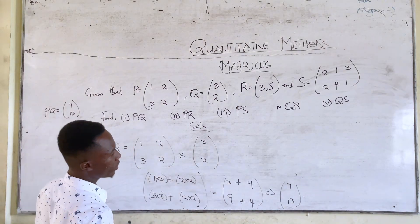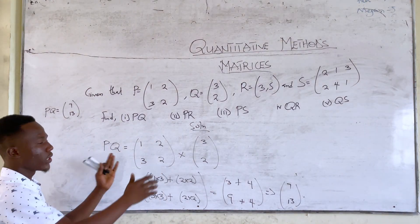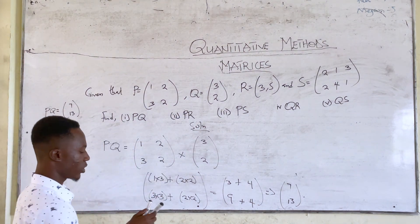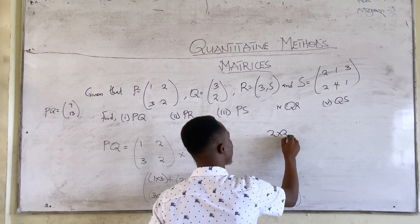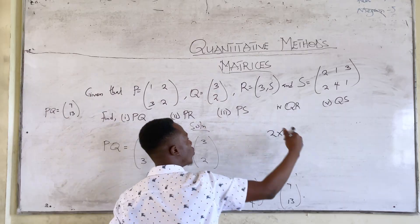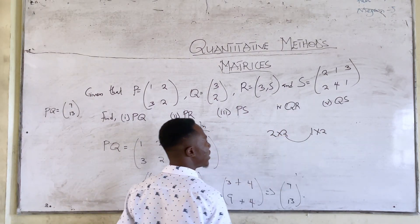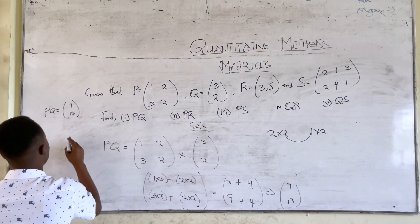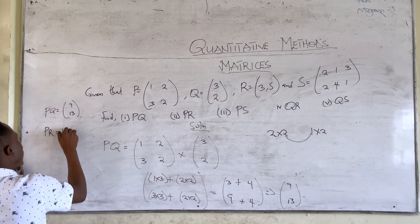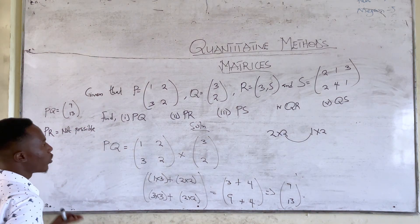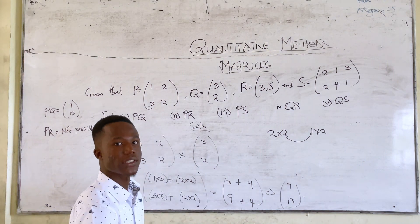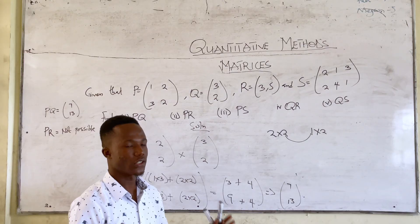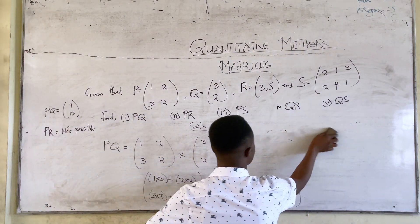Let's perform the second calculation: PR. Let's check whether PR multiplication can be possible. P is 2×2. R is 1×2. You see, this inner number is 2 from P and 1 from R — they are different, so the calculation cannot be possible. For PR, we say: not possible. Please don't write 0. If you write 0, it means you solved it and got the answer as zero — 0 is a number. It is not possible.